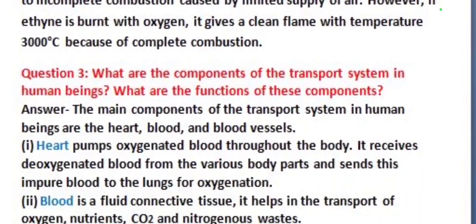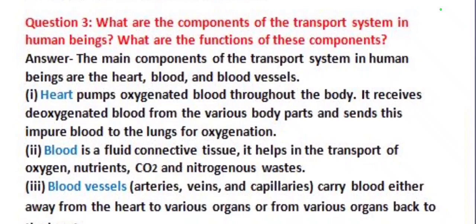Our next question is: what are the components of the transport system in human beings? What are the functions of these components? The main components of the transport system in human beings are the heart, blood, and blood vessels. The heart pumps oxygenated blood throughout the body. It receives deoxygenated blood from the various parts of the body and sends this impure blood to the lungs for oxygenation.